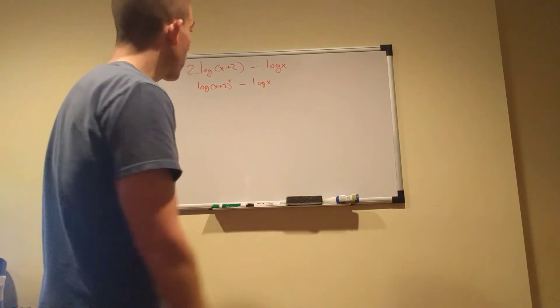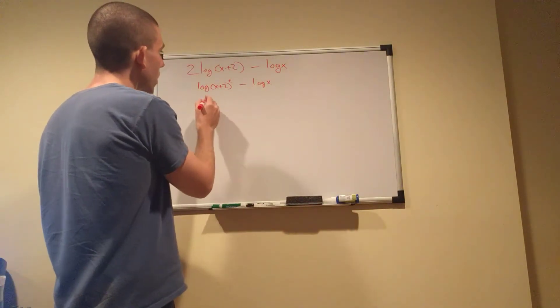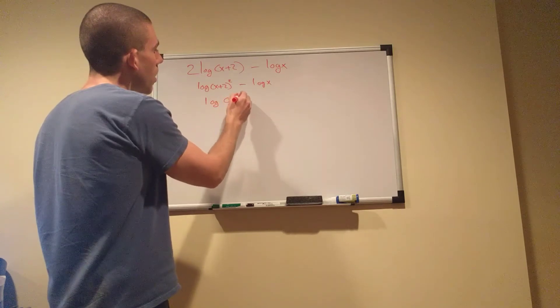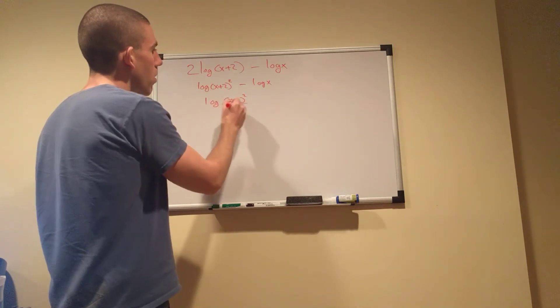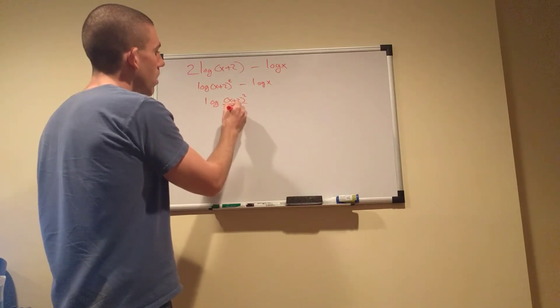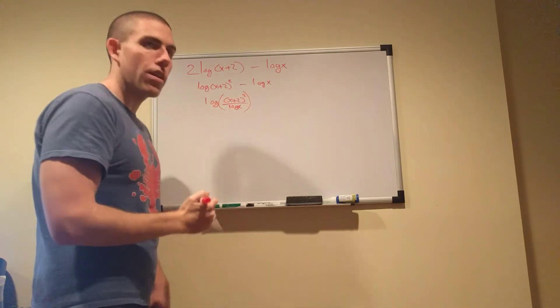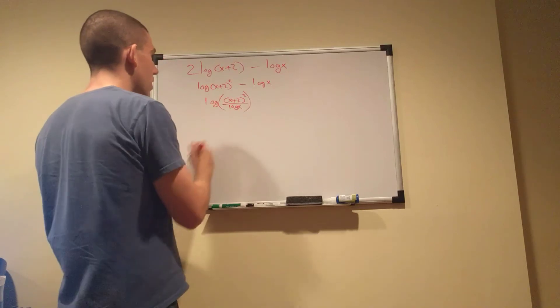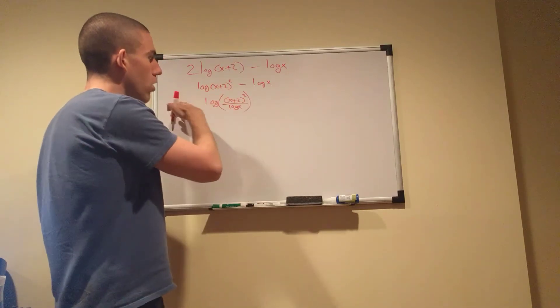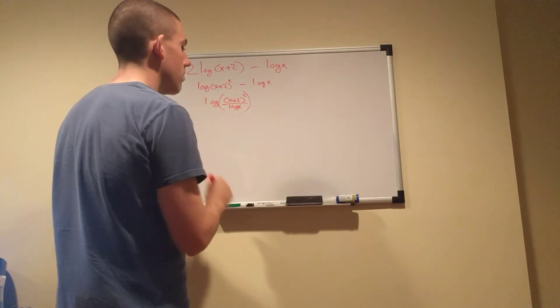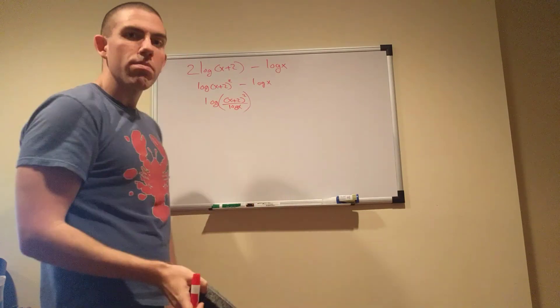We have 2 times the log of x plus two minus log x. And then reverse the quotient rule to bring this guy over here. So you're going to end up with log x plus two squared over log x. And that is the quantity of which you're taking the log. Right? It's not log x plus... It's not the logarithm over log x. It's in here. And that's good enough.